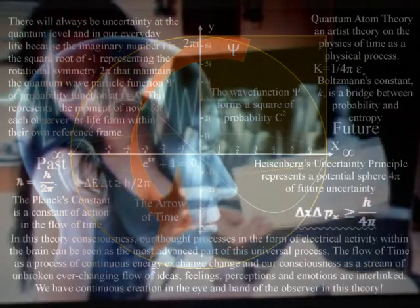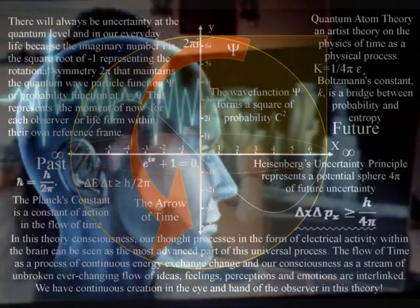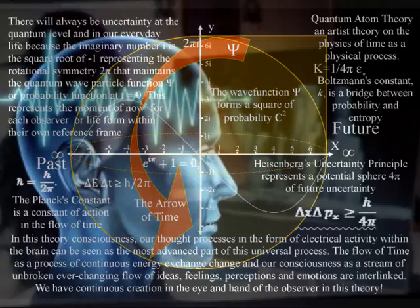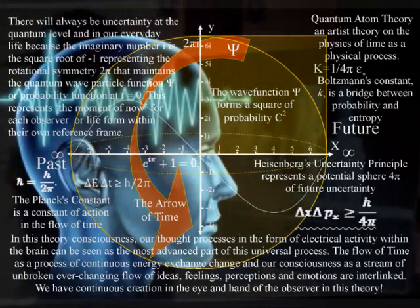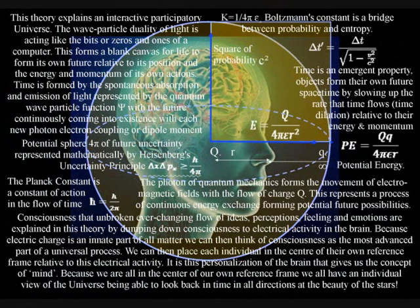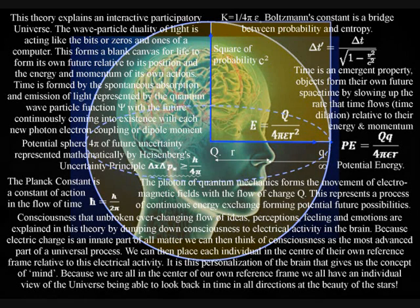One of the great problems in understanding the nature of reality is understanding consciousness and how the concept of mind interacts with the objective world of our everyday life. This theory gets around this problem by explaining consciousness as the electrical activity that is aware of its own electrical potential. This is possible because the light photon is the carrier of the electromagnetic force.